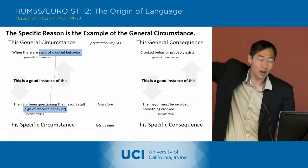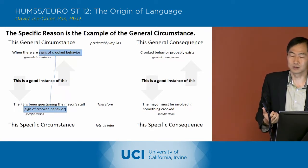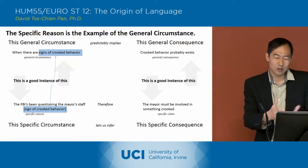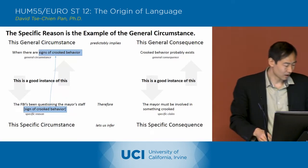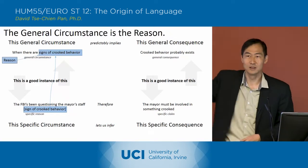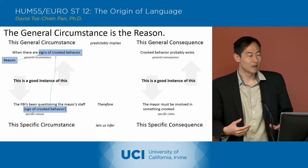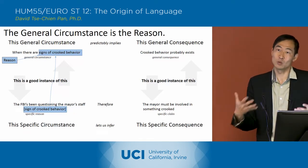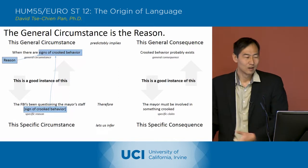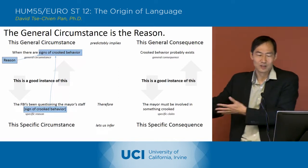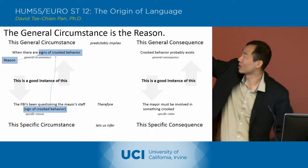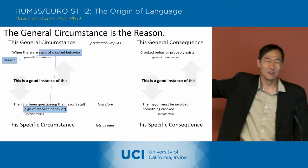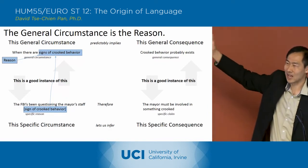They've also put it up at the top as the general circumstance we're looking for in order to conclude the claim. So we've got the reason — when we see signs of crooked behavior, like when we see wetness and conclude there's been rain, when we see signs of crooked behavior, we conclude something crooked happened. That's when they talk about the general circumstance and the general consequence: when we see a sign of crookedness, then crookedness happened.